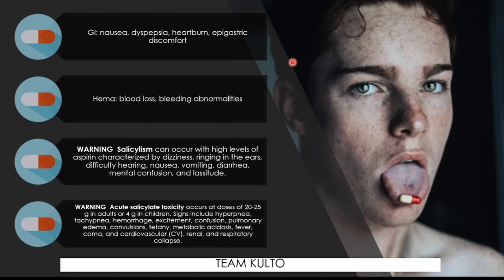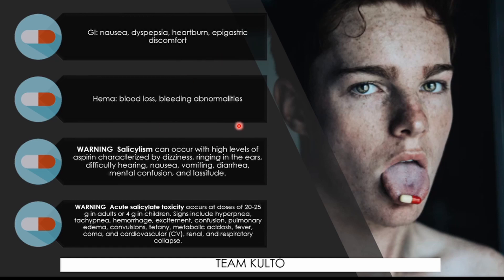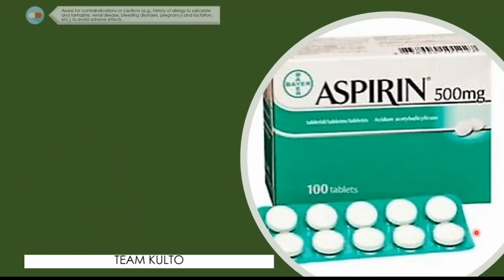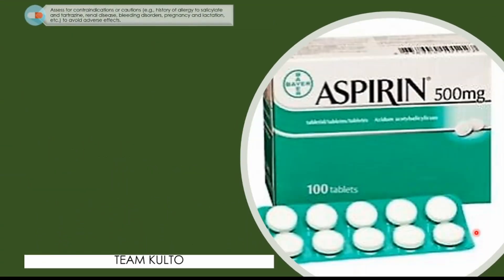Watch out for warning signs of acute salicylate toxicity, which occurs at doses of 20 to 25 grams in adults or 4 grams in children. Signs include hyperpnea, tachypnea, hemorrhage, excitement, confusion, pulmonary edema, convulsions, tetany, metabolic acidosis, fever, coma, and cardiovascular, renal, and respiratory collapse. Be mindful of these signs and symptoms — correlate them with your nursing responsibilities.